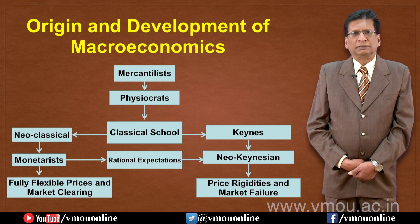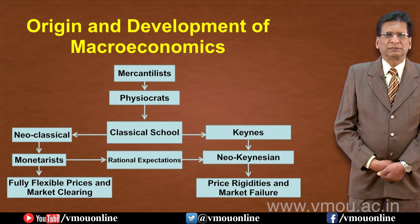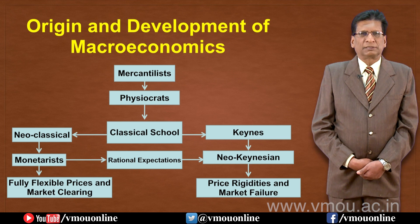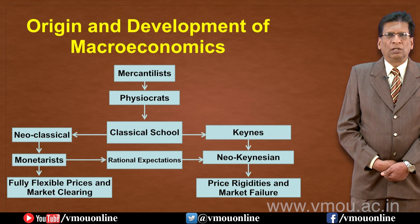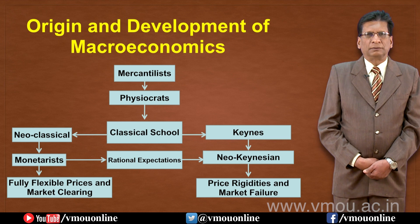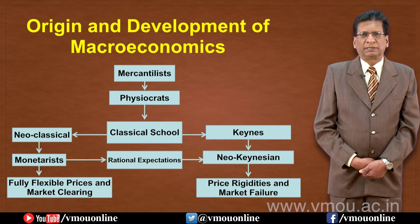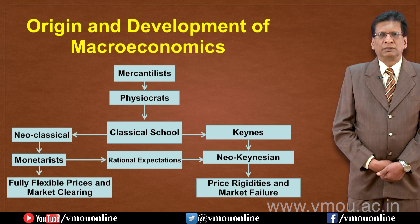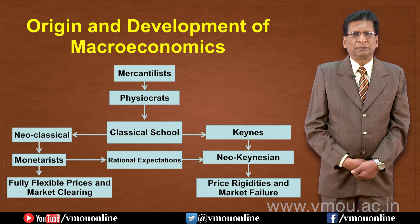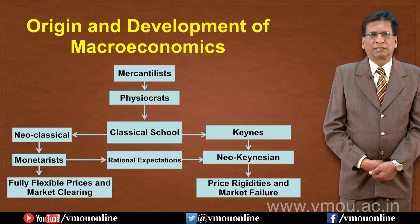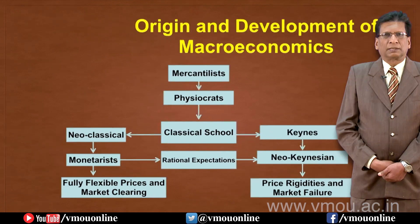The origins of macroeconomic thought follow a chart: first Mercantilist, then Physiocrats, followed by Neoclassical, Classical, and Keynesian Theory. After that came the Monetarist Approach, Rational Expectations, and Neoclassical, leading to Fully Flexible Price and Market Clearing, then Price Rigidity and Market Failure.